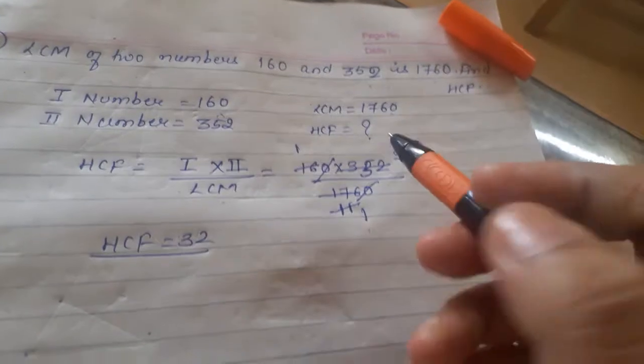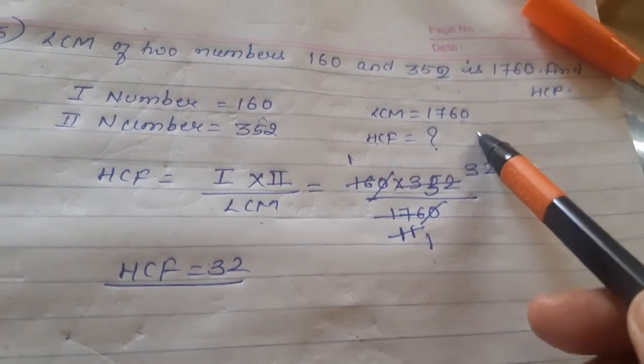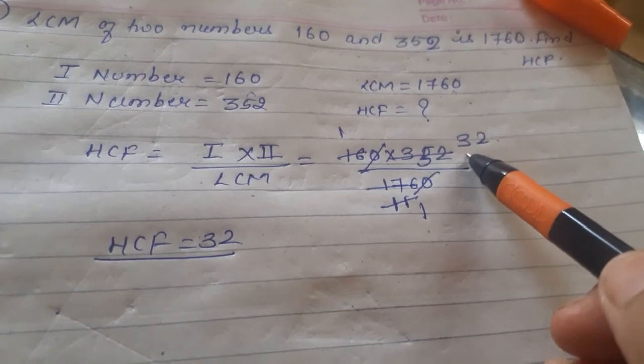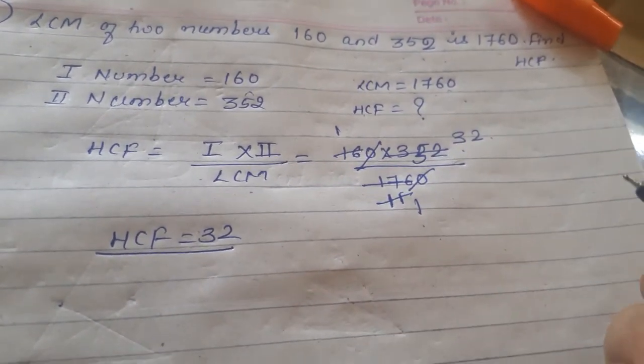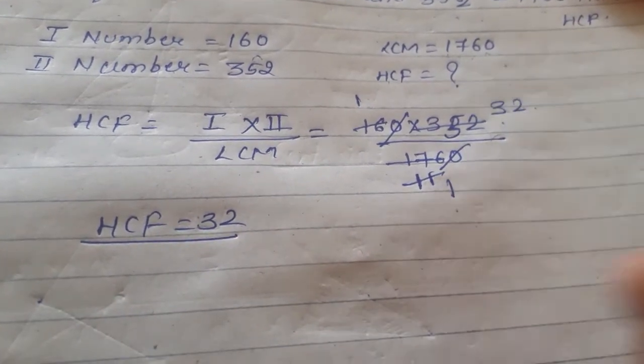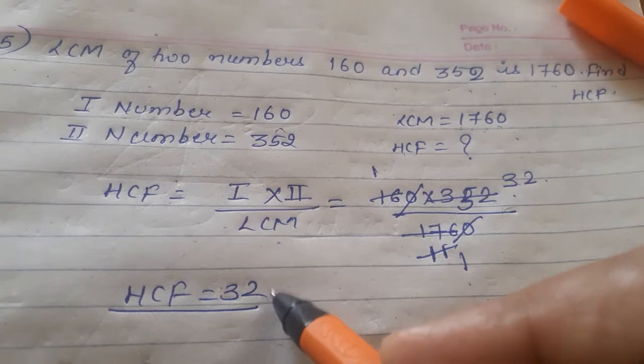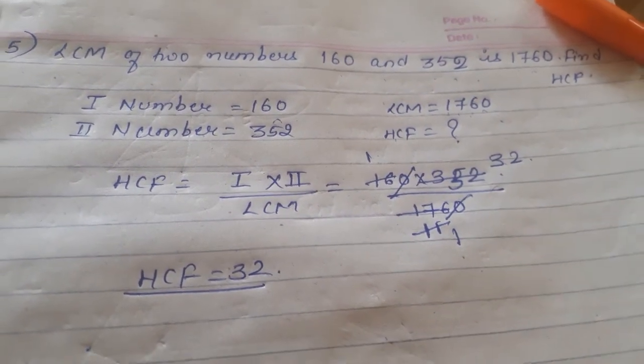How can we cross-check? We need to see if 1760, which is our LCM, is divisible by 32. When you divide and check, you can verify that 1760 will be completely divisible by 32. So the HCF of 32 which we calculated is absolutely correct.